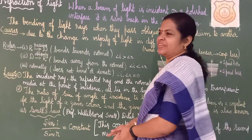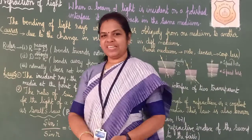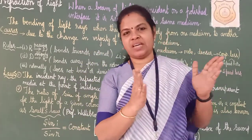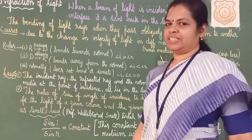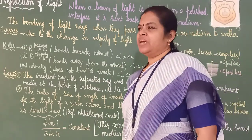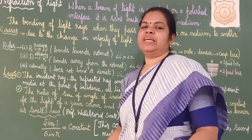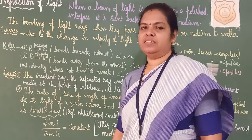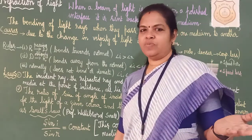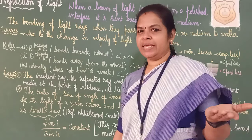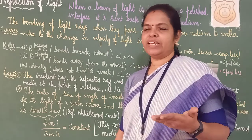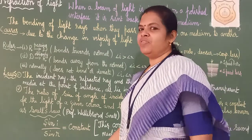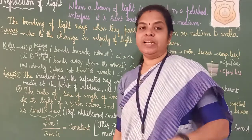Good morning children. We have completed reflection. In the light chapter, we have completed the first half, that is reflection, and we are going to deal with the second one — refraction of light. So we are very clear about what reflection of light is and what rules are used, and now we will see about refraction.